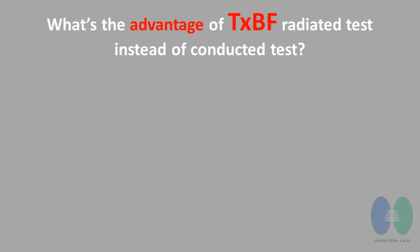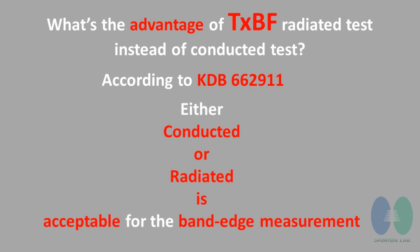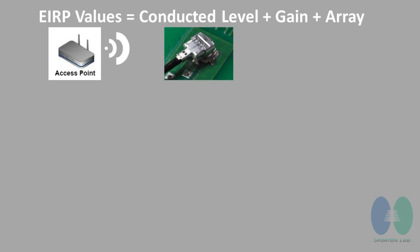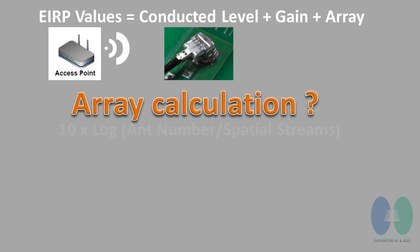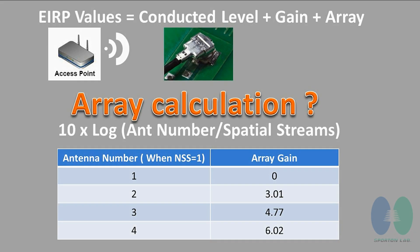What is the advantage of transmit beamforming radiated test instead of conductive test? According to KDB 662911, either conducted or radiated is acceptable for the band edge measurement. The RIP value equals the conductive level plus gain plus array gain. To calculate the array gain: it is the number of antennas divided by the spectrum, expressed in log times 10. You can also see this in the reference table.